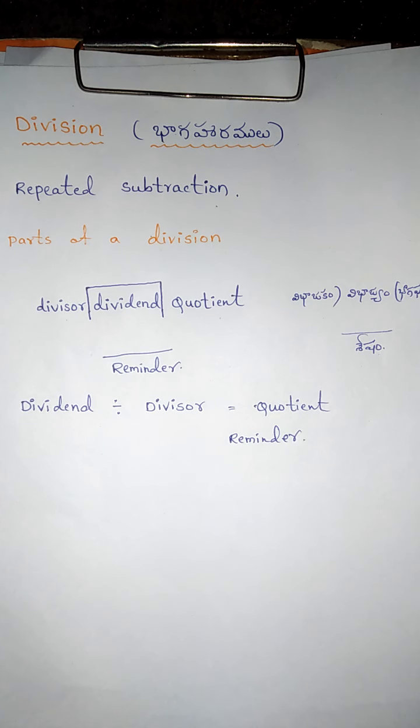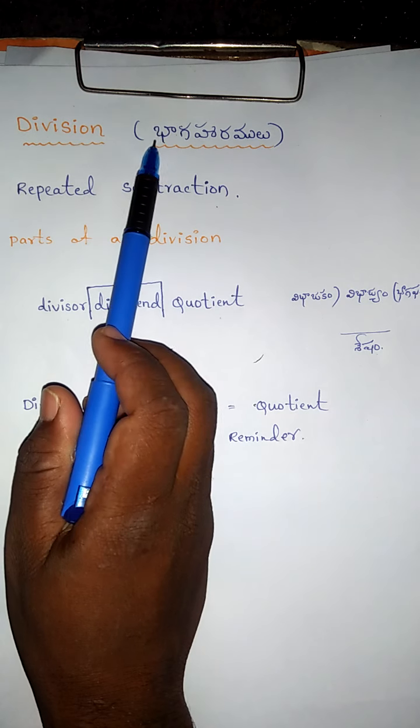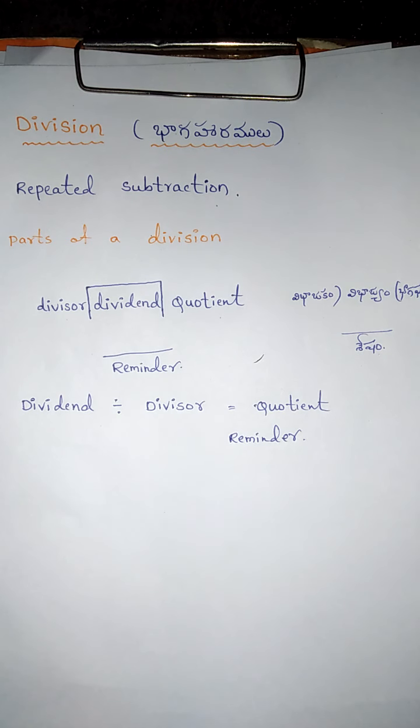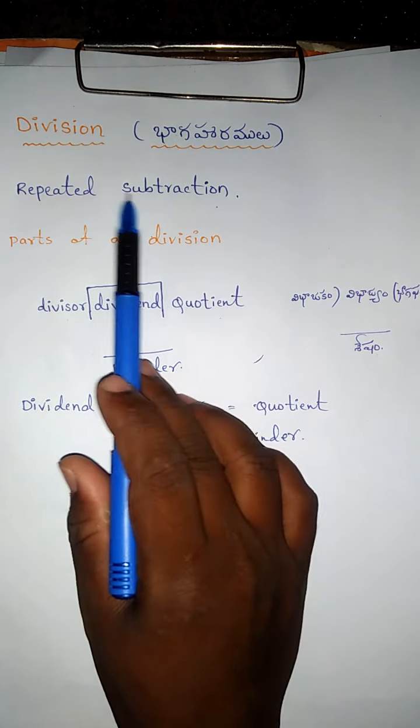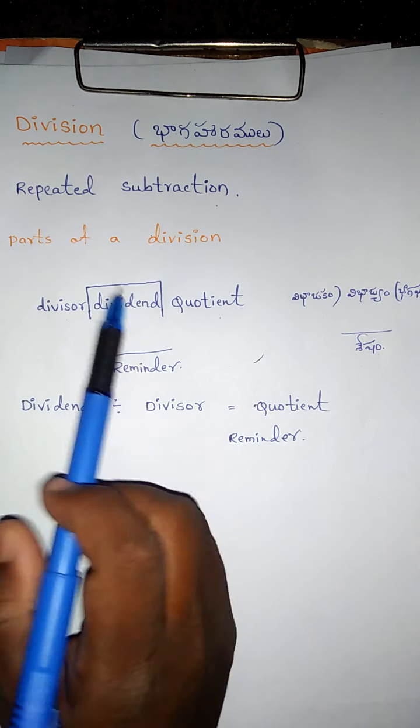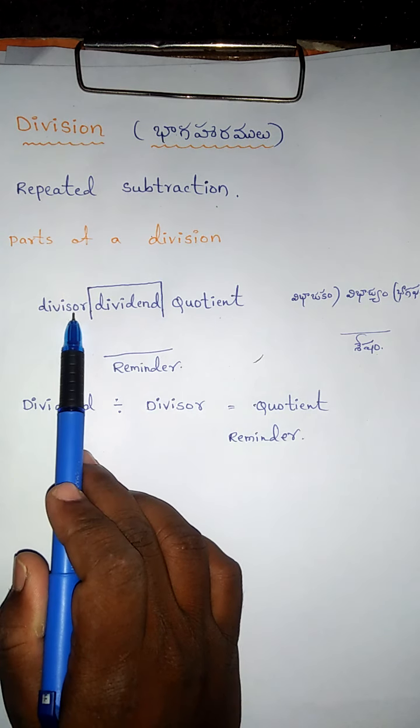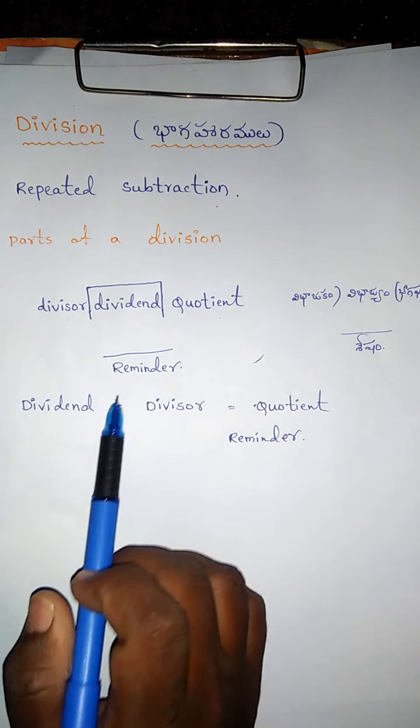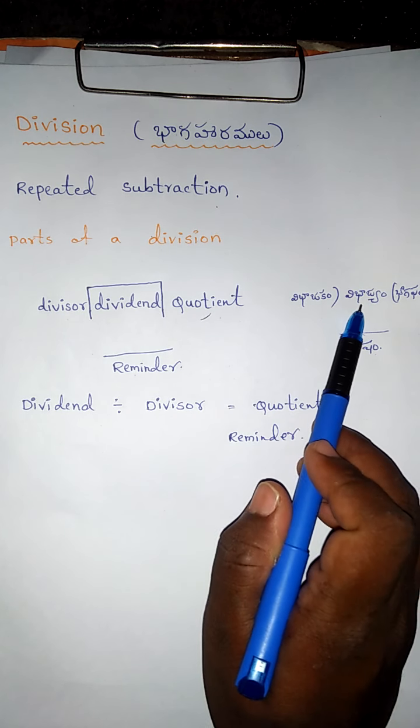Hi friends, today I am going to explain the topic of division. Division means repeated subtraction. When we repeat subtraction within a number, that is called division.